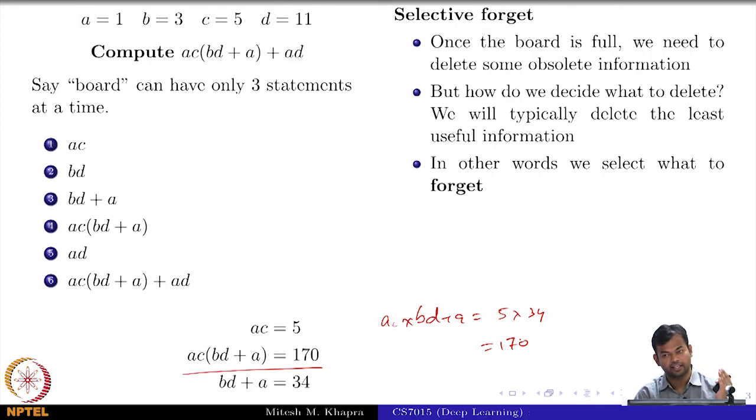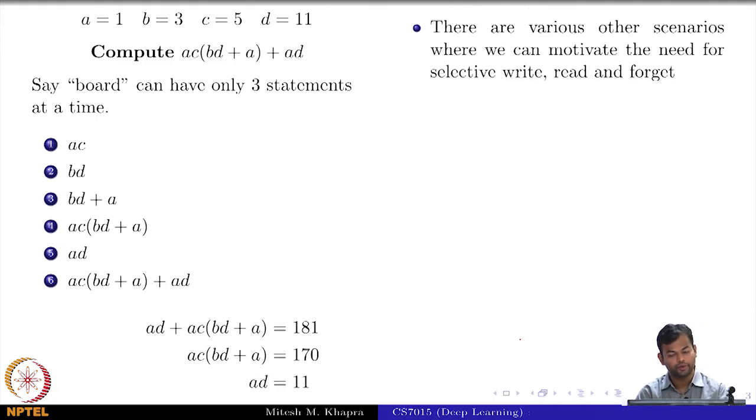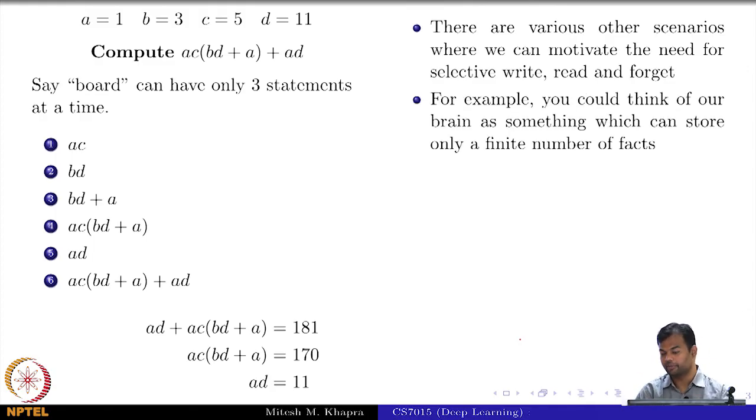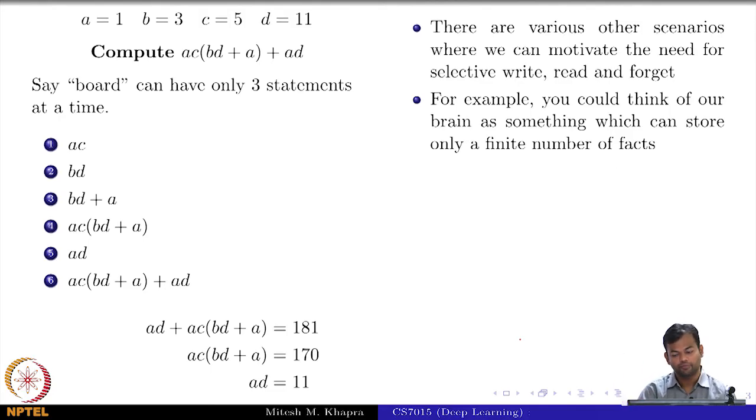So selectively writing, selectively reading and selectively forgetting things which are there in our constant memory is something that we do regularly. And there are other ways of motivating this. You could even think of our brain as something which can store only a finite number of facts. As we keep growing old, if you keep learning more and more things, you can only retain a finite number of facts and what happens inadvertently is that you erase some of the steps, not consciously of course, you do not have a delete button or anything, but you erase some of these things. You forget a lot of things which had happened a year back or so. And also at various times if I ask you what was this which I had done in last class, most of you forget to do the selective read, but that is what you do. You always do selective forget. But that is what we typically do in our brain also. Anytime when you are dealing with a finite size memory you will always have these three operations, either they are explicit or implicit, but the intuition is that you end up doing this.